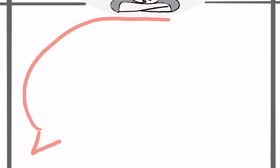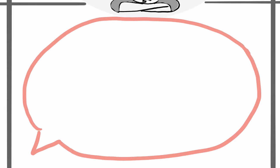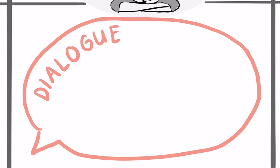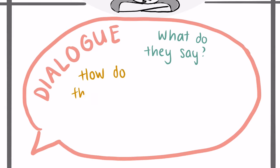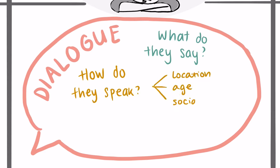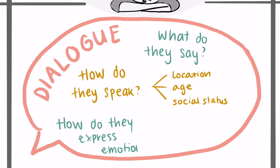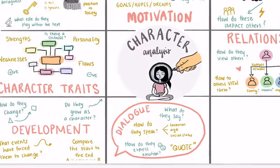Dialogue is also key to ensure you understand what they are saying and how they're speaking, as this can tell you a lot about their location, their age, as well as their social status, and how they express emotions. It's also important to create a list of quotes that the character says that you can refer back to later on.